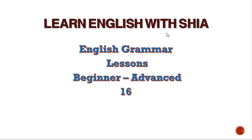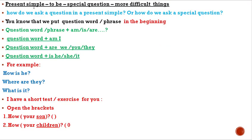Welcome back. Welcome to Learn English with Shia. In this lesson we talk about present simple 'to be' special questions — more difficult things. How do we ask a question in present simple, or how do we ask a special question? You know that we put the question word or phrase in the beginning: question word or phrase plus verb 'to be'.